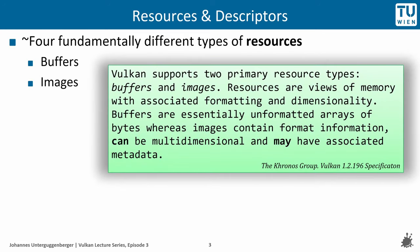The Vulkan specification says precisely: Vulkan supports two primary resource types, buffers and images. Resources are views of memory with associated formatting and dimensionality. Buffers are essentially unformatted arrays of bytes, whereas images contain format information and can be multidimensional and may have associated metadata.